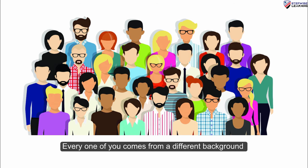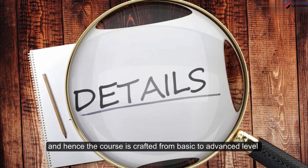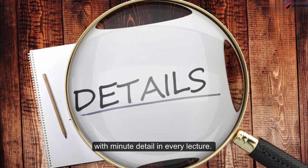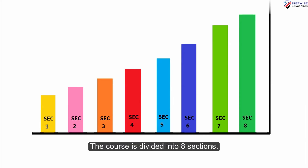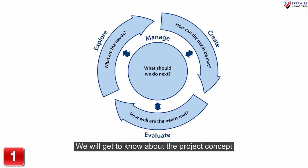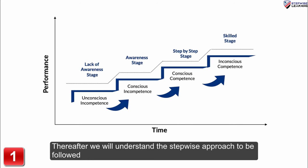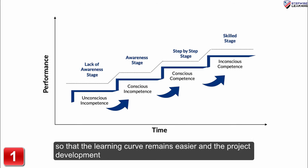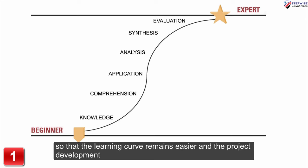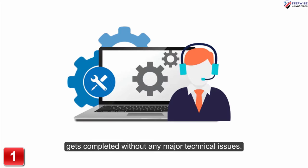Every one of you comes from a different background, and hence the course is crafted from basic to advanced level with minute detail in every lecture. The course is divided into 8 sections. In the first section, we will get to know about the project concept and how we are going to solve a real-time problem by developing this project. Thereafter, we will understand the stepwise approach to be followed so that the learning curve remains easier and the project development gets completed without any major technical issues.